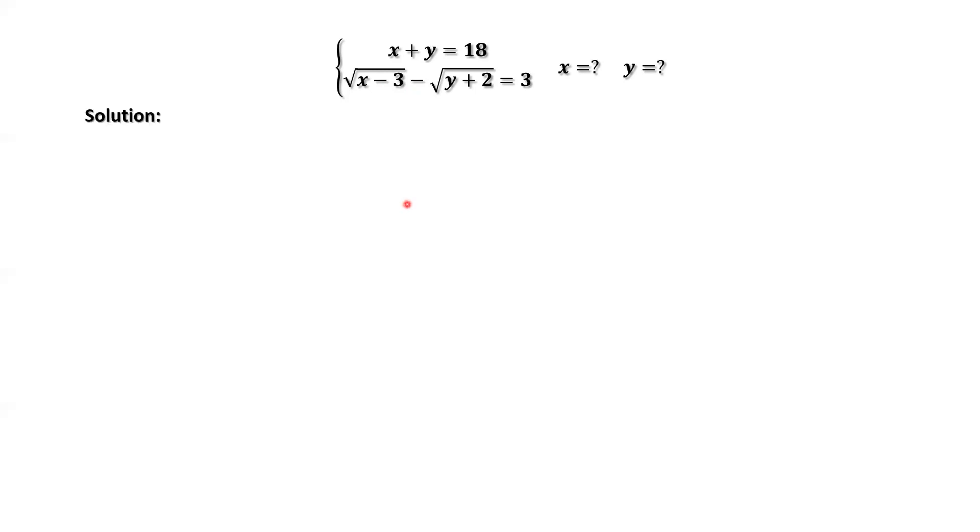We rewrite the first condition to match the second condition. From the second condition, we can see inside the root sign, we have x minus 3 and y plus 2.